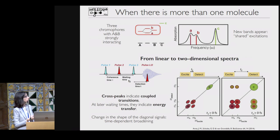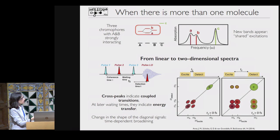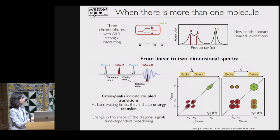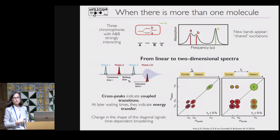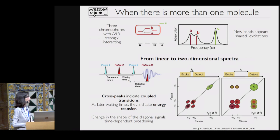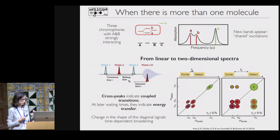In the 2D spectra, using the same example with the two interacting A and B, it's clear that the excitations are coupled, because you have off-diagonal peaks that connect them, while C is alone. If you wait and let the system relax in time, you see the appearance of new cross peaks between C and the AB shared excitation, indicating energy transfer between the two systems. Moreover, in time you can follow the time-dependent evolution of the homogeneous and inhomogeneous broadening.